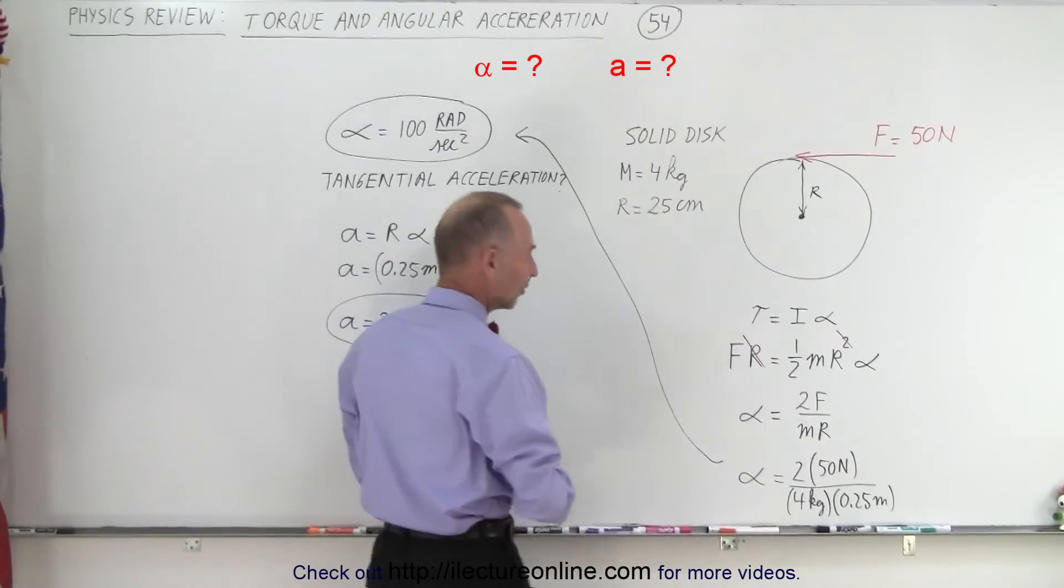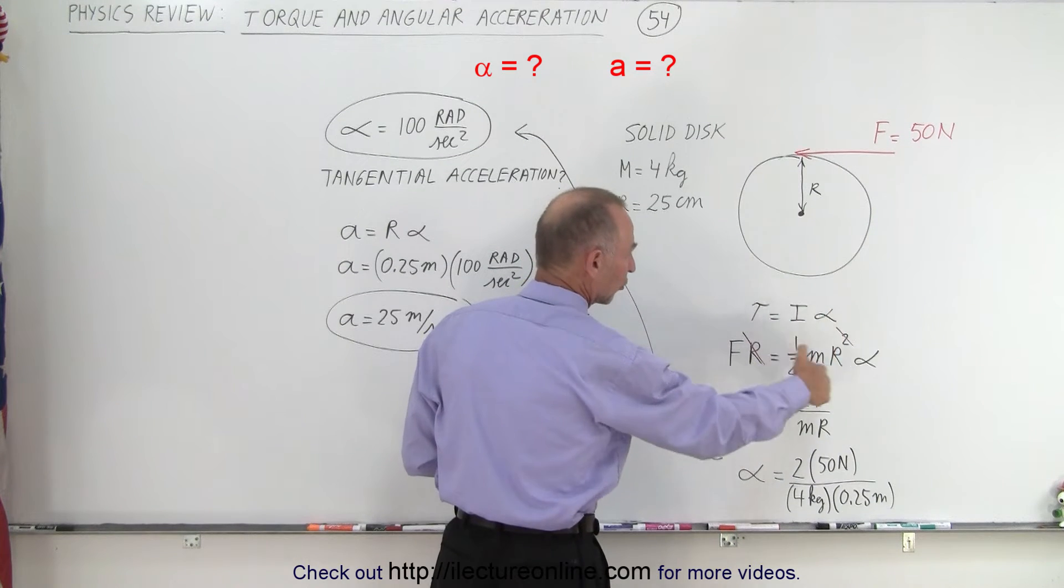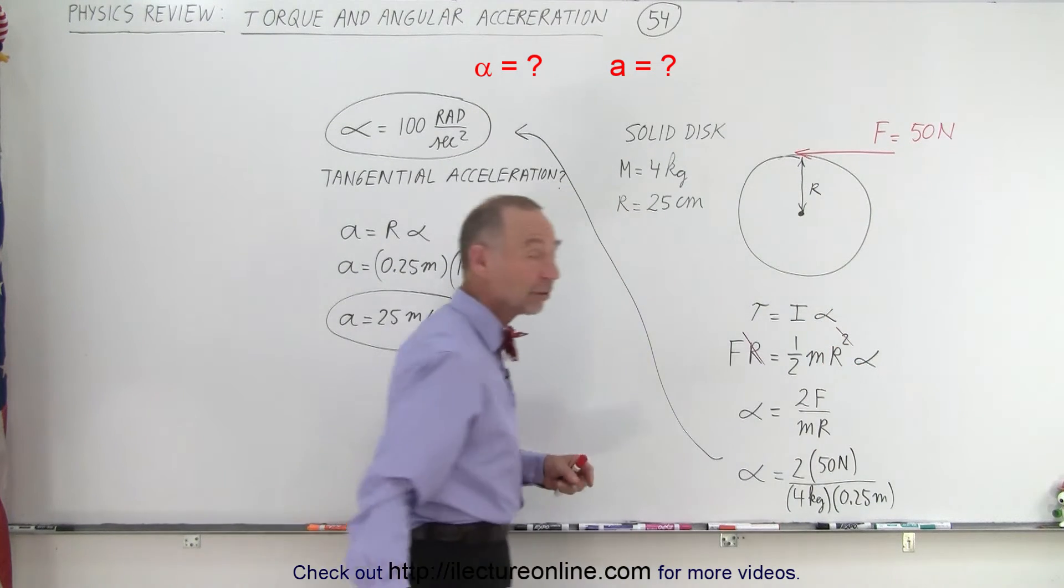So therefore, F times R is the torque caused by the force, equal to one-half mR squared, which is the moment of inertia of the disk, times the angular acceleration.